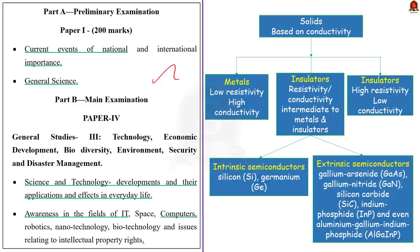What is a semiconductor? Based on the conductivity of solids, they can be classified into three major types. Firstly, there are metals which possess very low resistivity, that is high conductivity. The exact opposite is insulators, which have high resistivity, that is low conductivity. Semiconductors have resistivity or conductivity intermediate to metals and insulators.